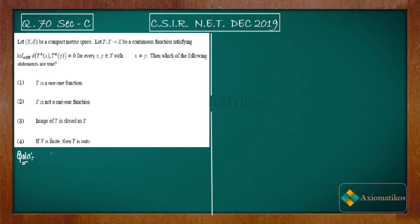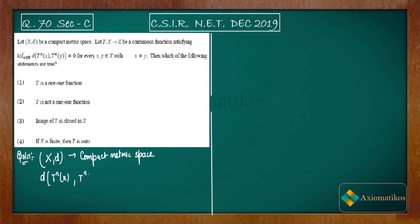We are given that X,D is a compact metric space. The condition given is that the infimum of the distance between T^n(x) and T^n(y) over all n in the natural numbers is non-zero for all x,y in X with x ≠ y.